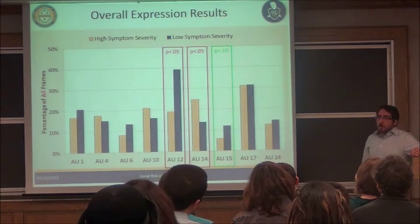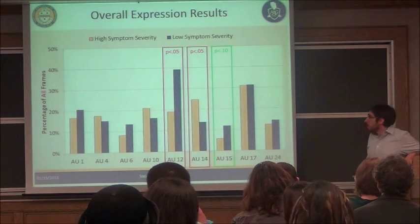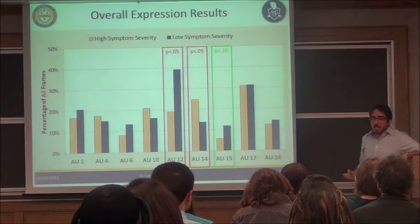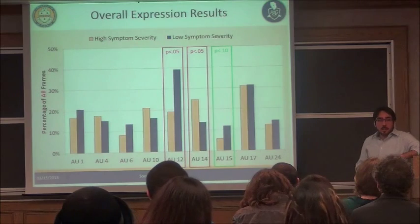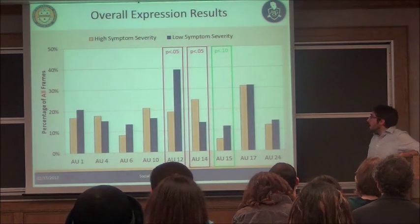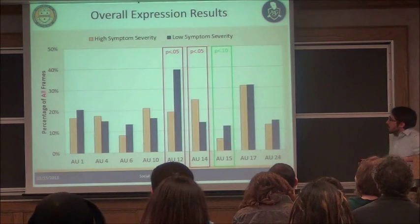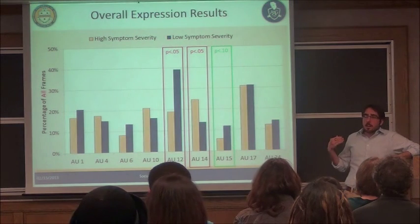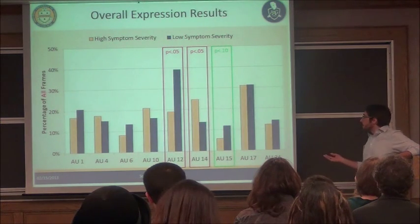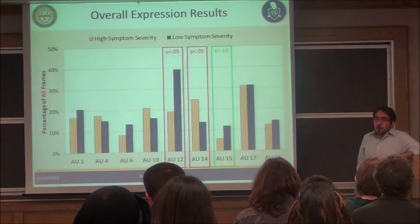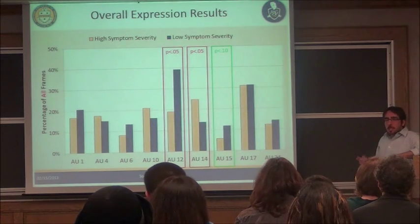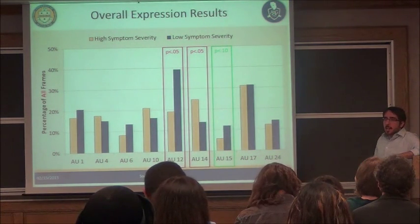For AU14, the contempt lip-puckering expression, this is much more common when severely depressed — around 25% of the time — dropping to about 15% when they remit. And perhaps surprisingly, the rate of AU15, the lip corners being pulled down, typically associated with sadness, was actually less common when more depressed. You might think depressed people would make a lot of sad expressions, but in fact they're making fewer of them.